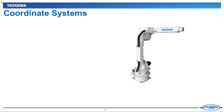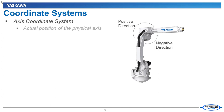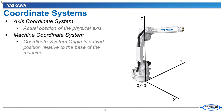PLCopen Part 4 defines four coordinate systems that can be used to control the machine. The first one is the axis coordinate system, which is used when working with a single axis of the machine — there is normally only a positive or a negative direction for this system. The second one is the machine coordinate system, which revolves around where the base of the machine is located. In the diagram here, the origin is located at the base of this robot arm, and any position given relates to the base position.